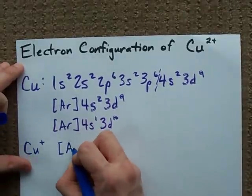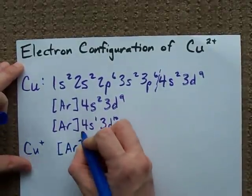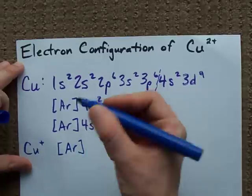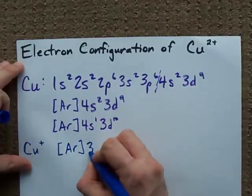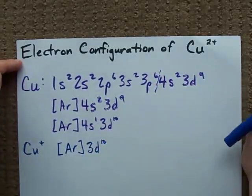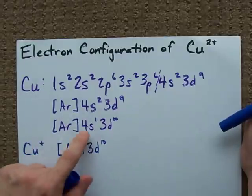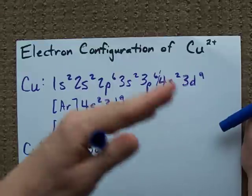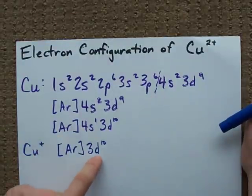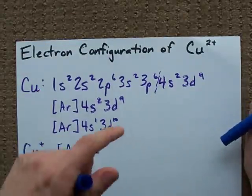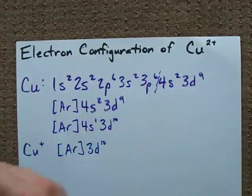So a copper 1 plus atom is 4s⁰, which I'm not going to bother writing, 3d¹⁰. Now that seems pretty stable because the 4s sub shell is completely empty, the 3d sub shell is completely full. Sounds energetically favorable to me.